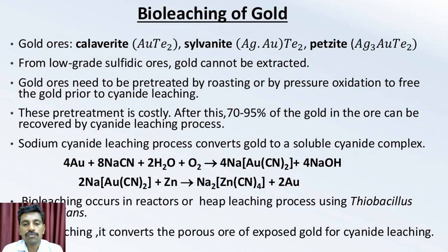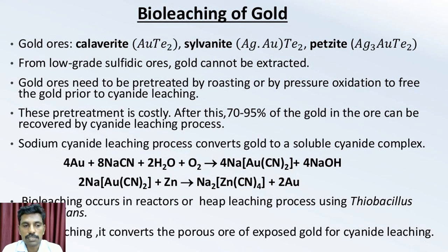Gold which can't be extracted when the ores are low-grade sulphidic condition. Gold ores must be pre-treated by roasting or by pressure oxidation to free out gold particles prior to cyanide leaching. This pre-treatment is a cost-effective manner. After this pre-treatment, 70 to 95% of the gold in the ore can be recovered by cyanide leaching process.